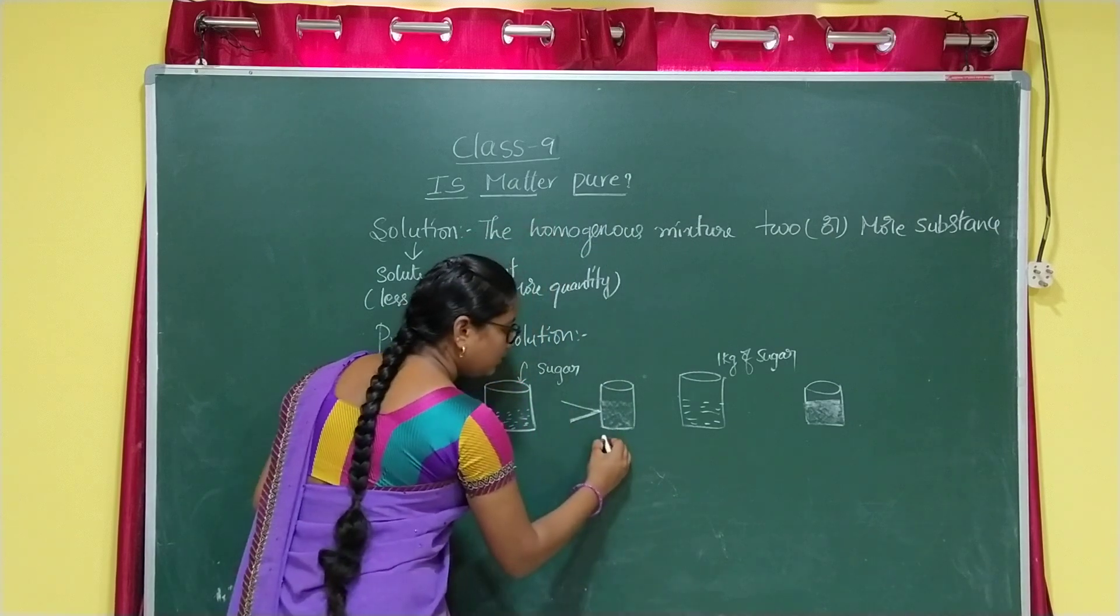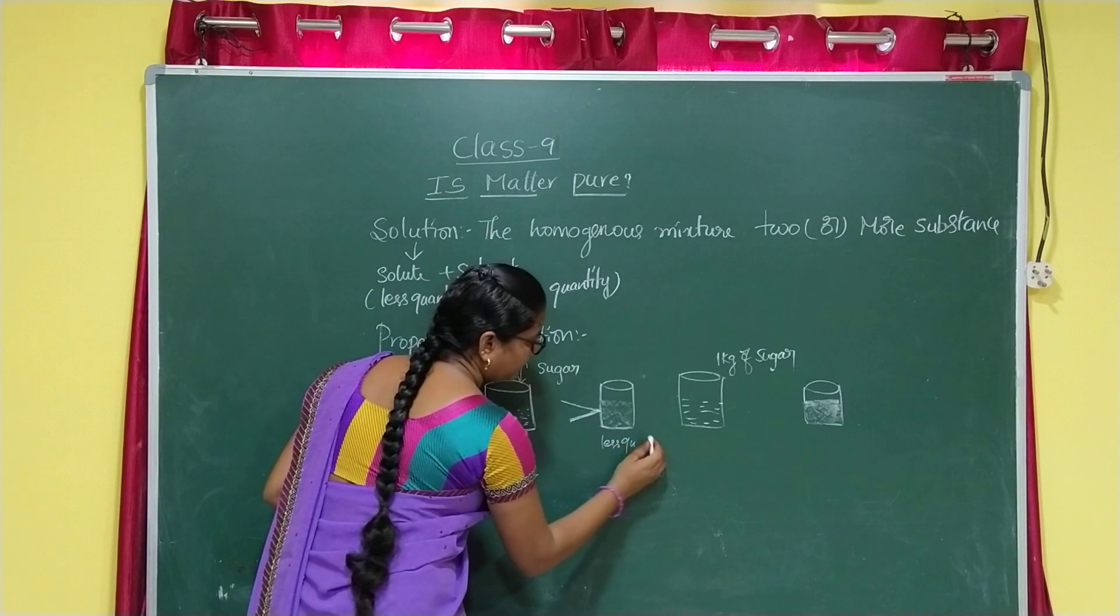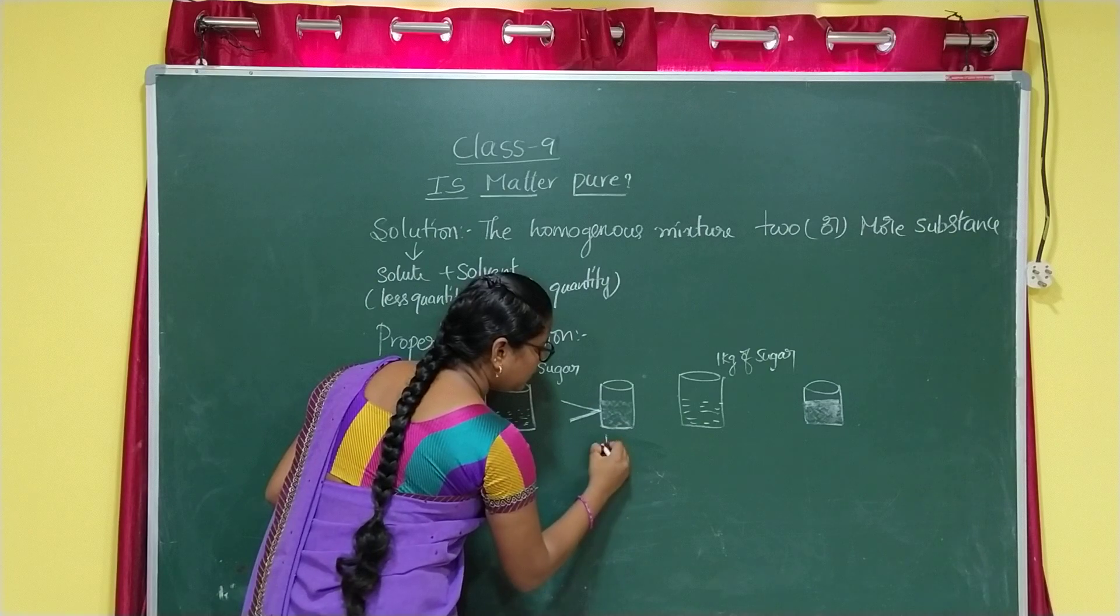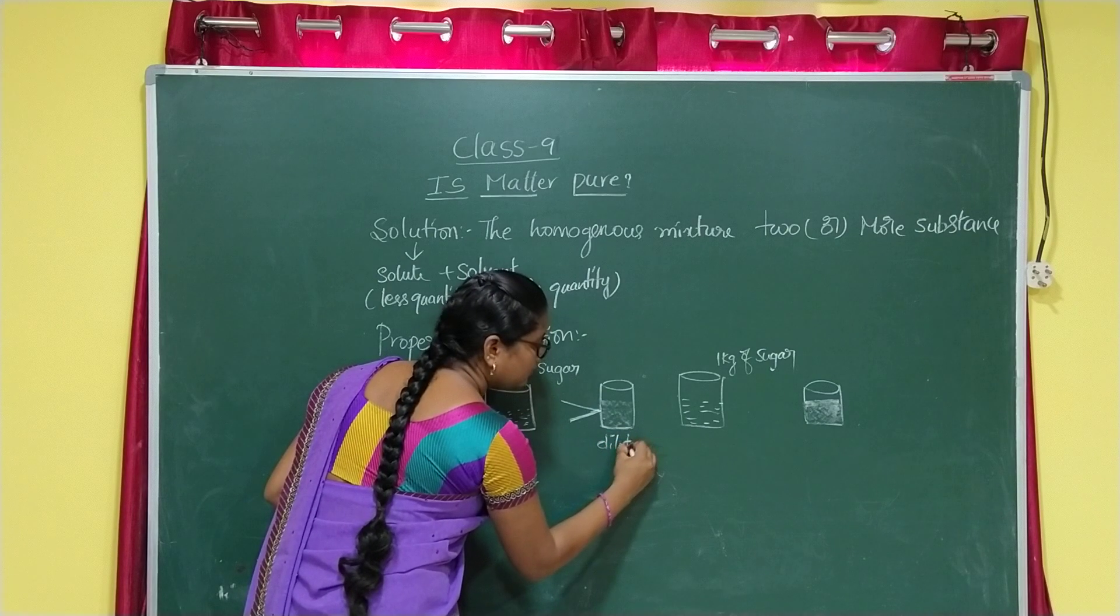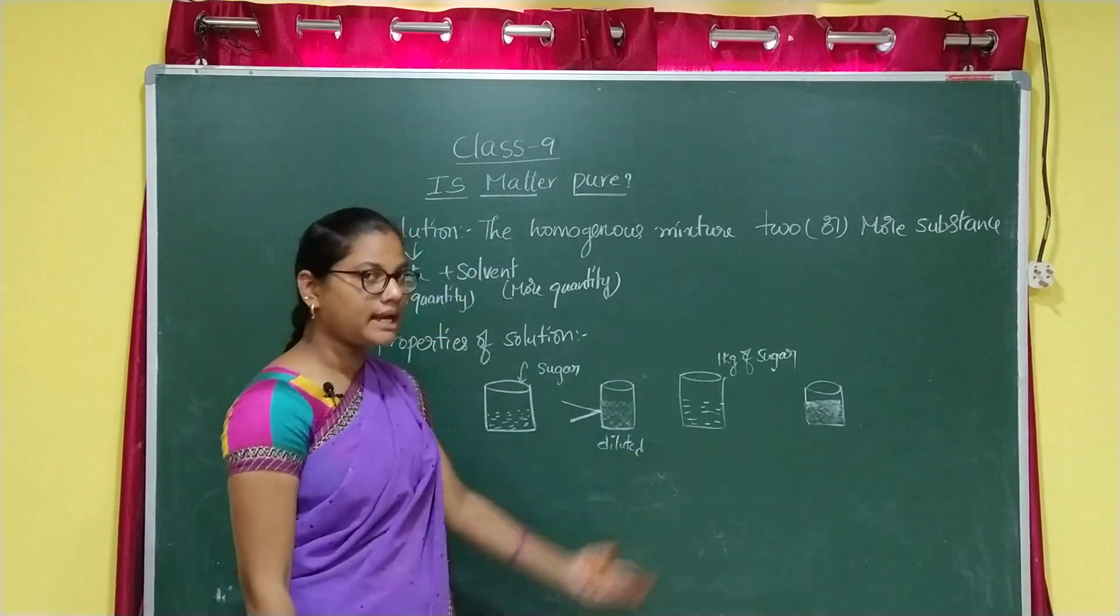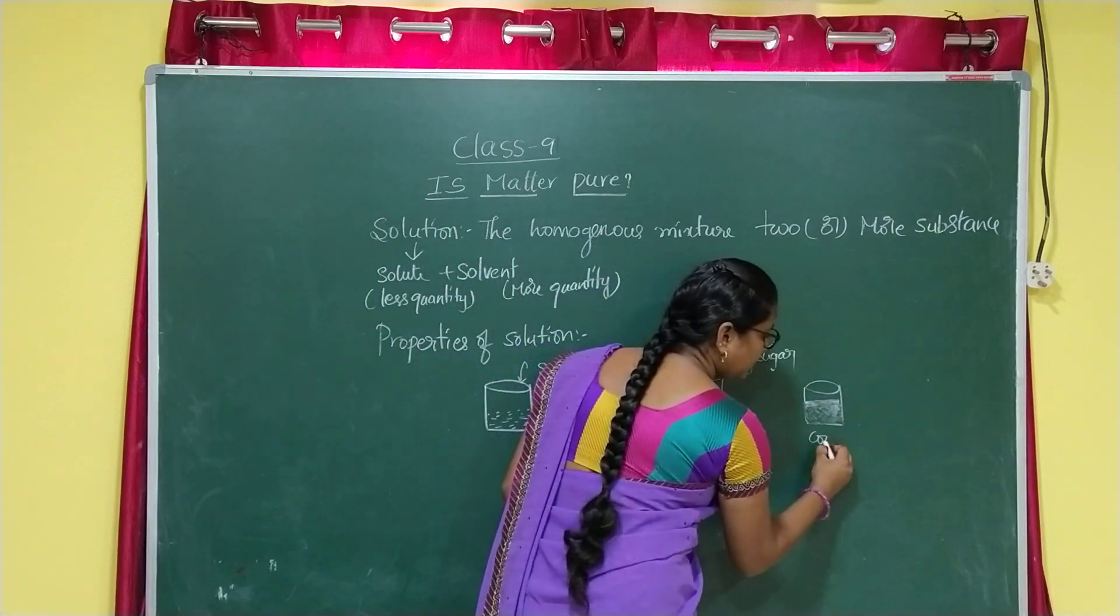This with less quantity is dilute. This is concentrated. I will explain what is dilute and concentrated in next class.